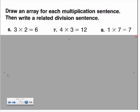This idea can also be applied as we draw an array of our own. The instructions here ask us to draw an array for each multiplication sentence, then write a related division sentence. In this example, number six, they give us the multiplication sentence three times two equals six. We know that the first factor, three, represents the number of rows we will need. The second factor, two, represents the number of counters or objects in each row of our array. And the number six represents the product, or the total number of counters we will need.